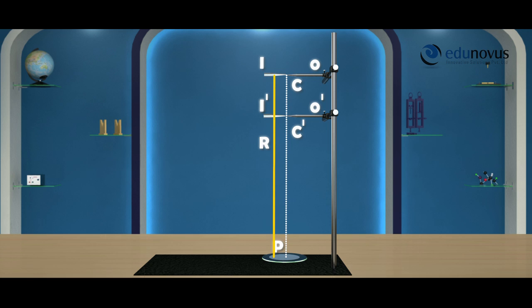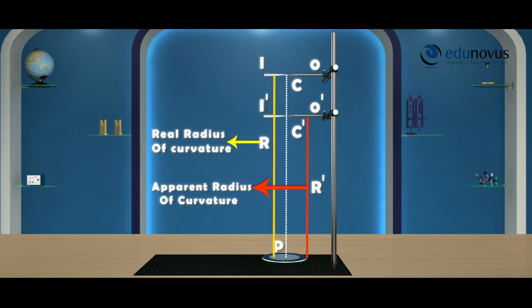The real radius of curvature of the mirror is PC', which is equal to R'. R' is the apparent radius of curvature of the mirror.